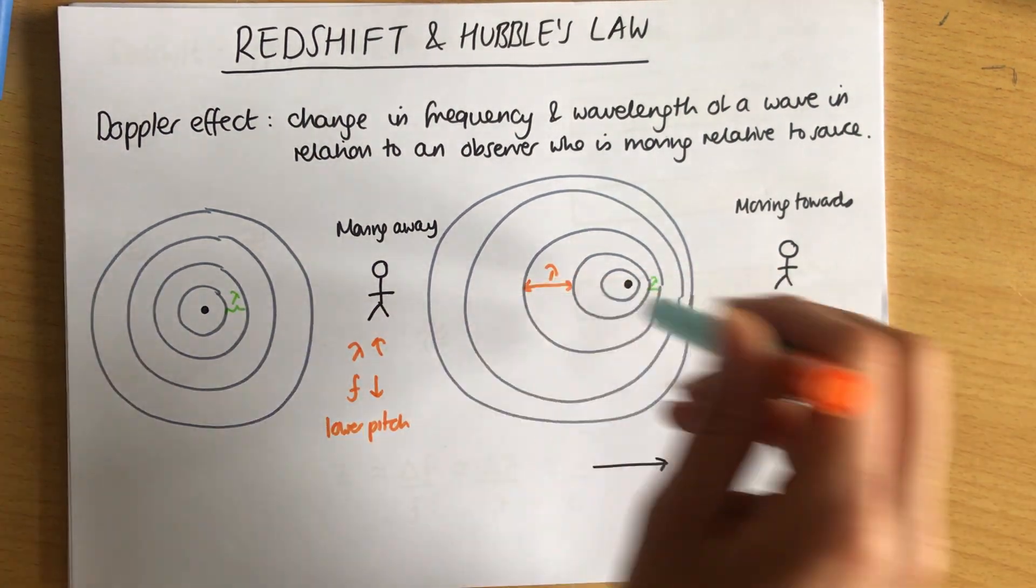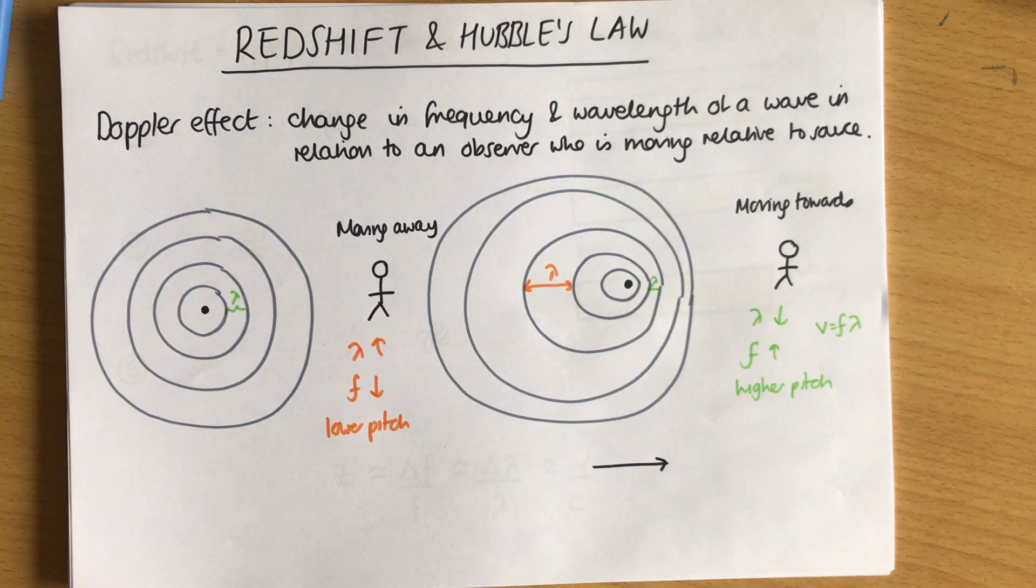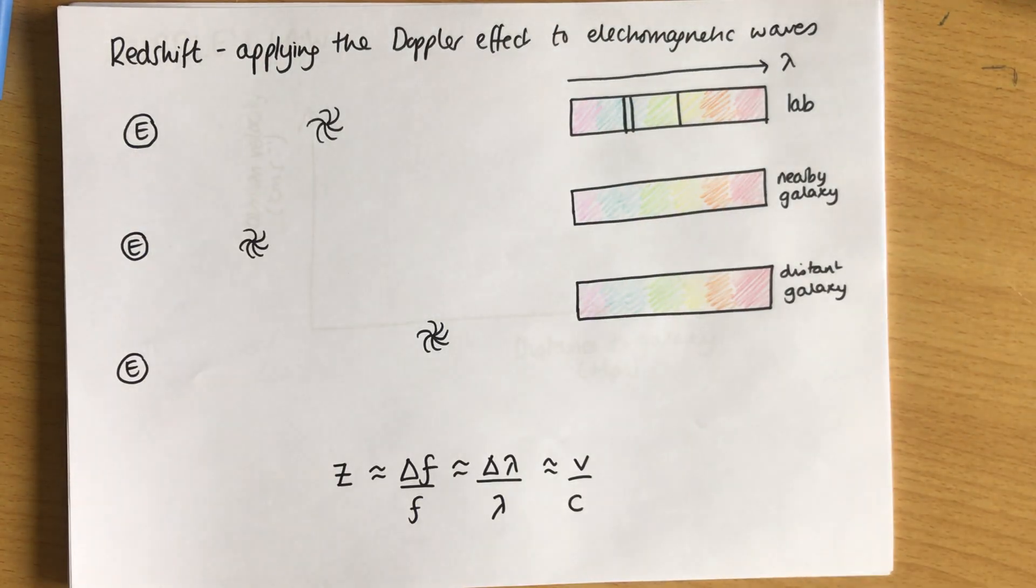So it's the change in frequency and wavelength of a wave in relation to the observer who is moving relative to the source. So it can either be that the source is moving to you or away from you, or that you are moving towards or away from the source. Now the reason we need to know about the Doppler effect is because we can apply the Doppler effect to electromagnetic waves. And when we do that, we get redshift.